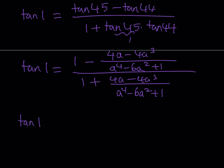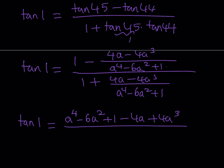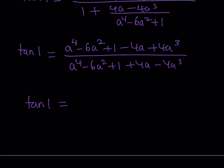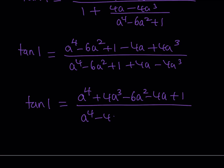Making a common denominator, notice both top and bottom share the same denominator, so we can focus on the numerators. The numerator becomes A to the fourth plus 4A cubed minus 6A squared minus 4A plus 1. The denominator becomes A to the fourth minus 4A cubed minus 6A squared plus 4A plus 1. That is our final answer for tangent 1 in terms of A.